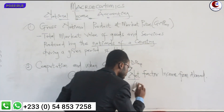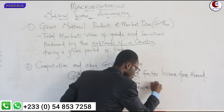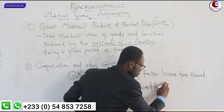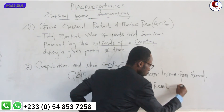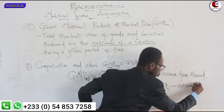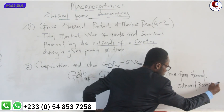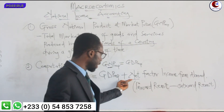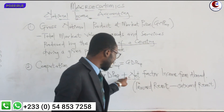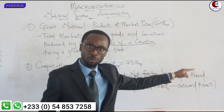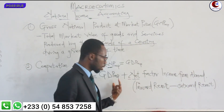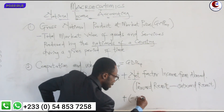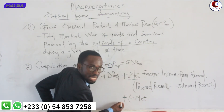So it is: inward remittance minus outward remittance. In a question, though we are adding Net Factor Income from Abroad, if you get a negative Net Factor Income from Abroad, you are going to subtract it. Because it will be plus into bracket with a negative value, and plus times negative is still negative.